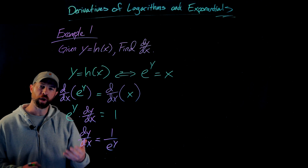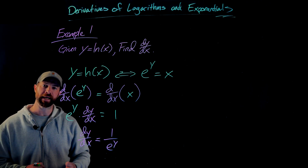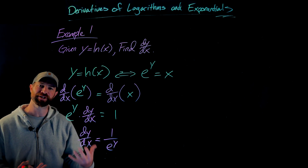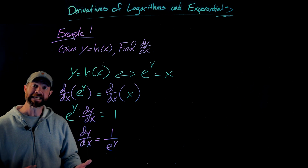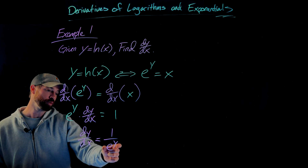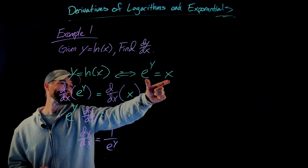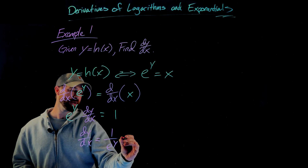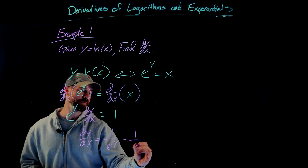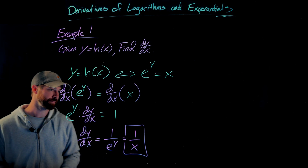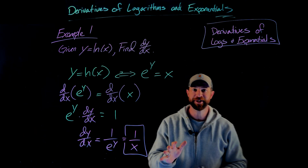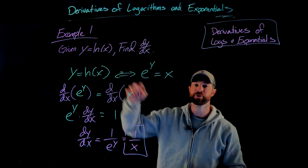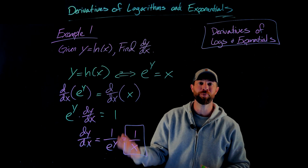It's awkward to write the derivative with respect to x in terms of y, so we want an equivalent expression for e to the y in terms of x. From our original definition, e to the y equals x, so we can substitute directly. Therefore dy/dx equals 1 over x. So given y equals the natural log of x, the derivative of the natural log of x is simply 1 over x.